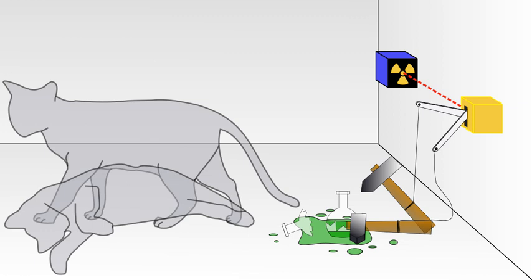Schrodinger's Cat. A cat, a flask of poison, and a radioactive source are placed in a sealed box. If an internal monitor detects radioactivity, that is, a single atom decaying, the flask is shattered, releasing the poison that kills the cat.